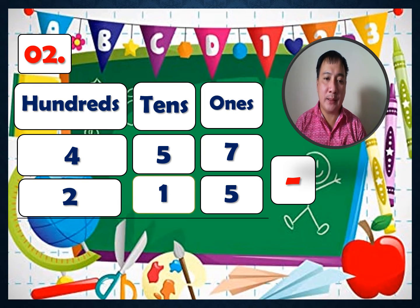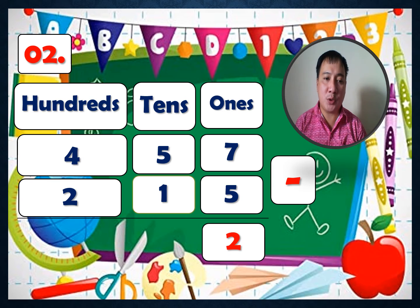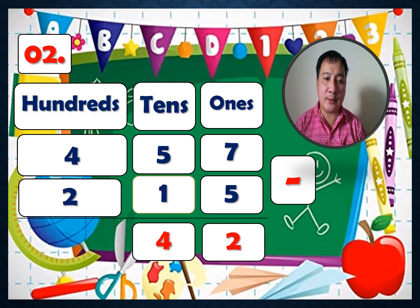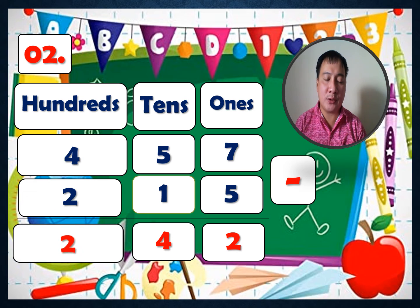Practice number two: 457 minus 215. Ones: 7 minus 5 equals 2. Tens: 5 minus 1 equals 4. Hundreds: 4 minus 2 equals 2. The answer is 242.